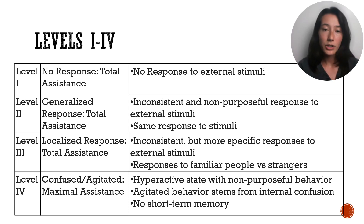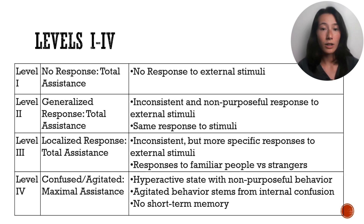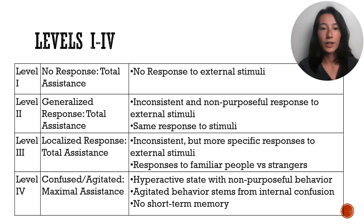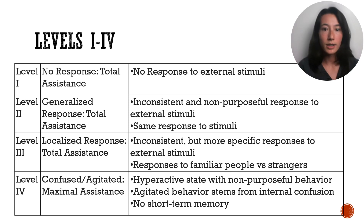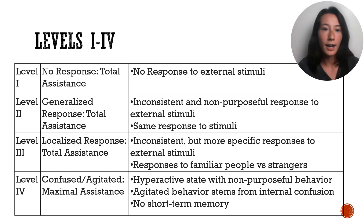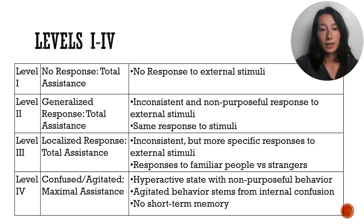Level 2: the patient will respond to an external stimulus, but it's not specific. For example, I could tickle the person on the shoulder ten times, and each time I tickle them, the person can have a different response. Let's say I tickle them on the shoulder — the first time they react by scratching the area; next time they open their eyes; next time they open their mouth. So they can really do anything, but it's likely not going to be the same thing. It's just a response to a stimulus.